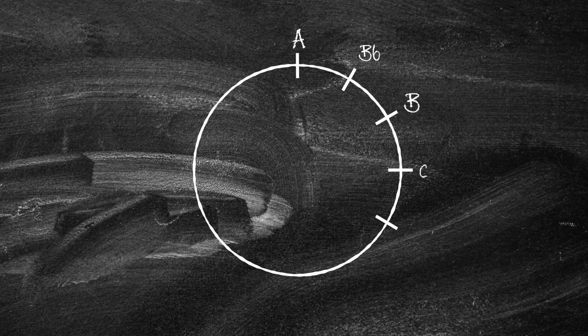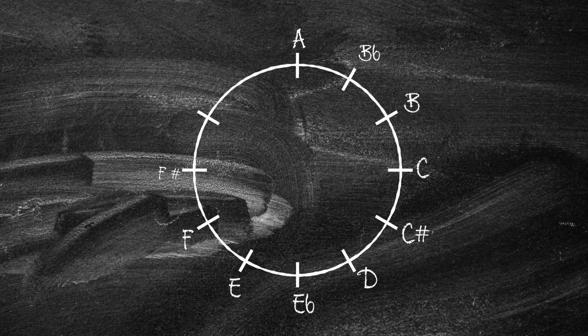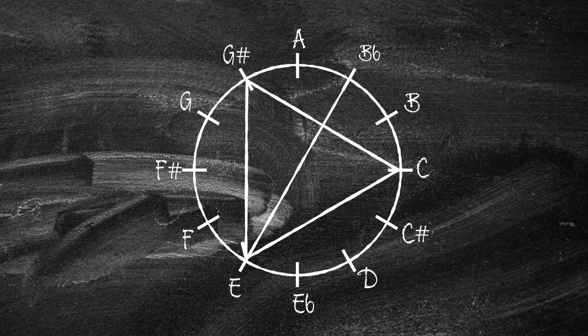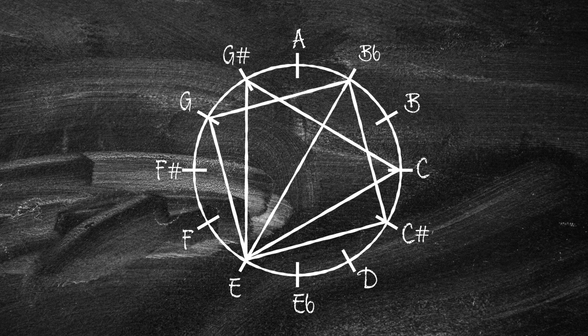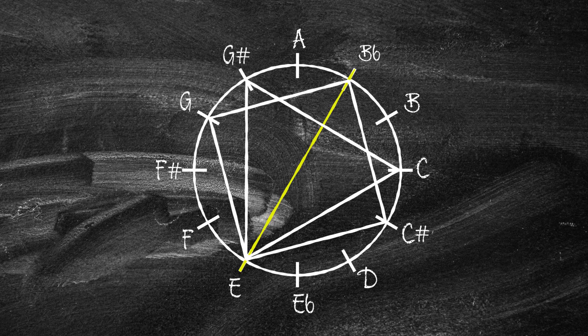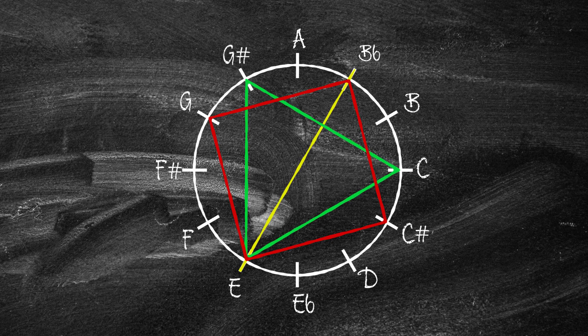There is a beautiful symmetry to music and in this mini-series of lessons we're going to take a look at three examples that you really need to know about. To do this we're going to see how you can split an octave into two, three or four equal parts and then consider the intervals and chords that this creates.